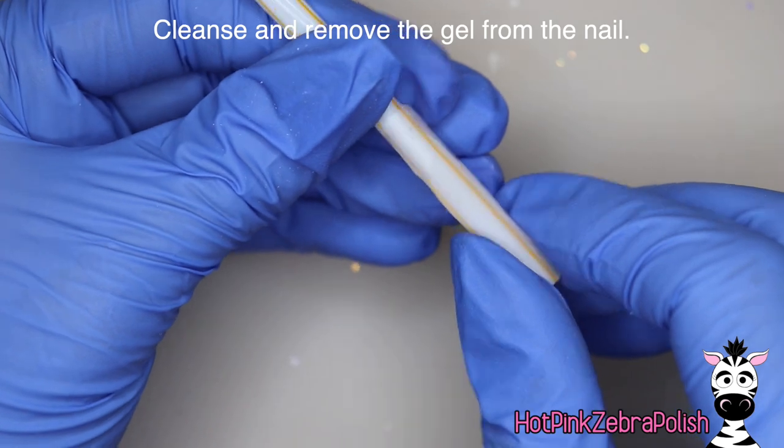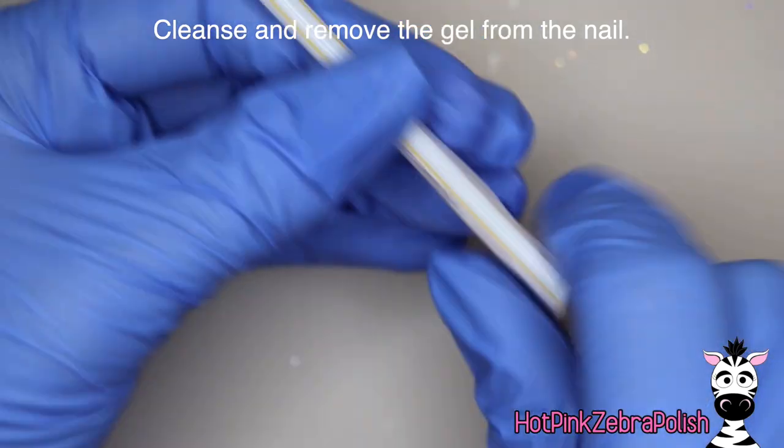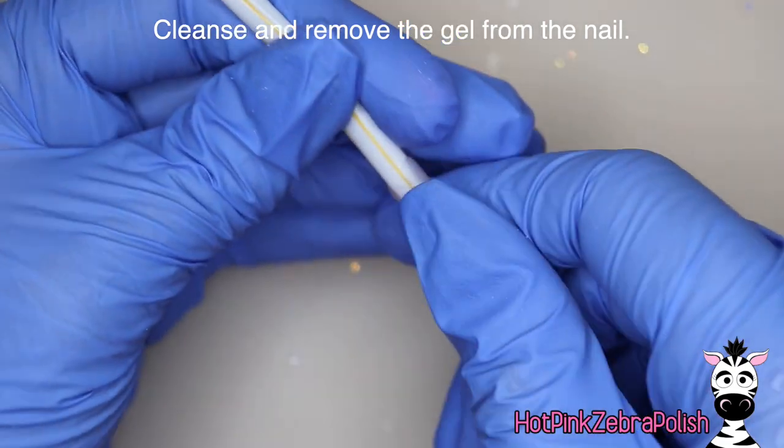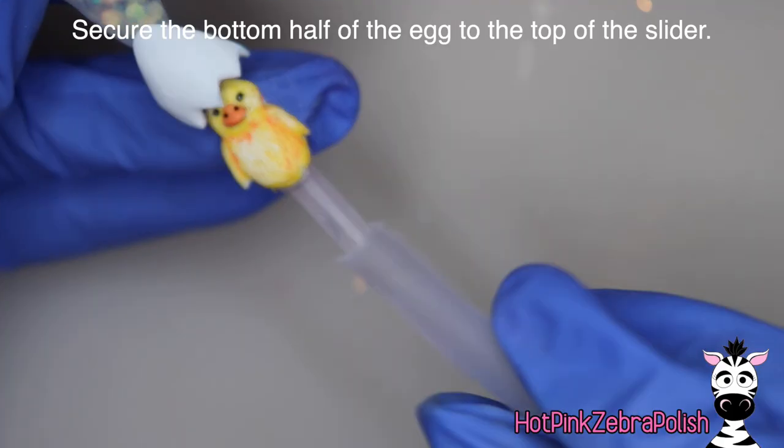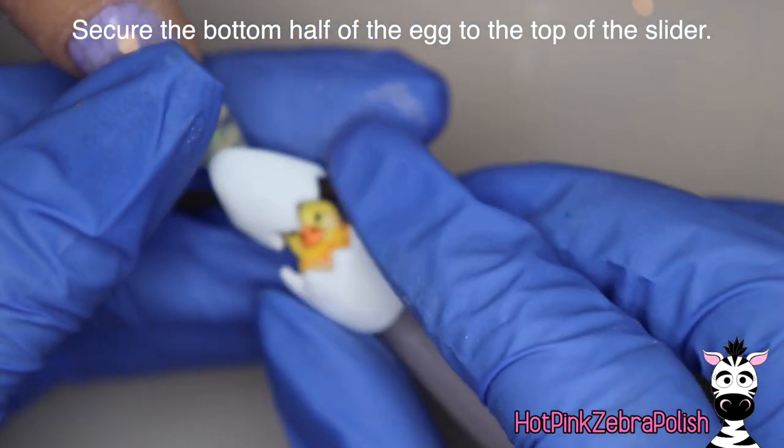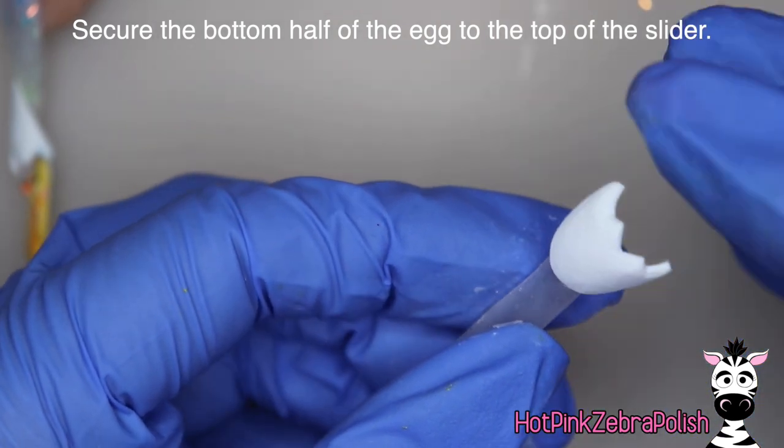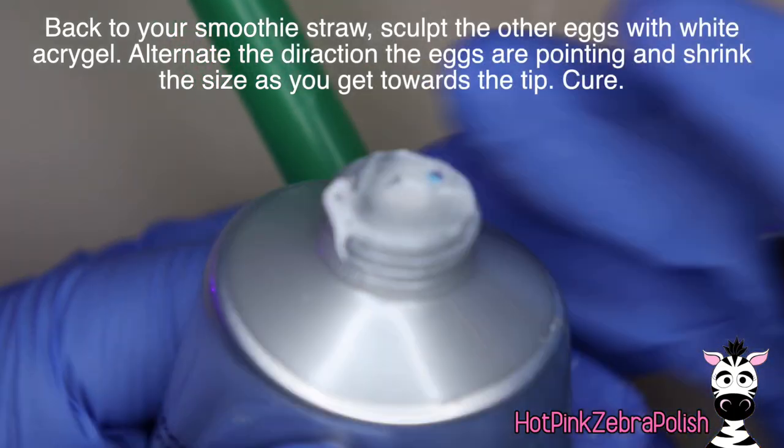So then after that's cured you can cleanse it. You can pop the straw out of the middle. It kind of helps to push in the straw so that it releases and gets a little bit of air between the two pieces. Then you're going to slide that up the little pole that's on the bottom of your chick and then attach the bottom of the egg to the tip of that slider.